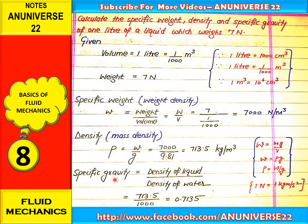The last parameter is specific gravity, which is the ratio of density of the liquid upon the density of the standard liquid. In case of a liquid, the standard liquid is water, and for water density is constant at 1000 kg per meter cube. So specific gravity equals 713.5 upon 1000, which gives 0.7135. Specific gravity is a dimensionless quantity.